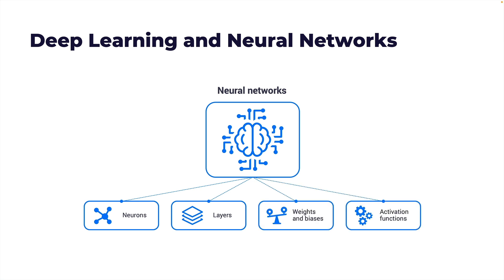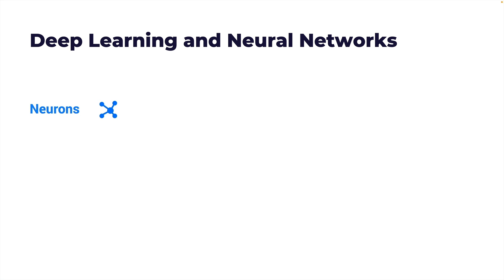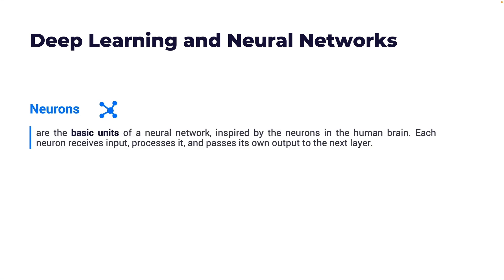Neural networks are composed of neurons, layers, weights, biases, and activation functions. Though this is debatable, their architecture is similar to how the human brain works. Neurons are the basic units of a neural network, inspired by the neurons in the human brain. Each neuron receives input, processes it, and passes it to another neuron in the next layer — that is the basic unit of any neural network.